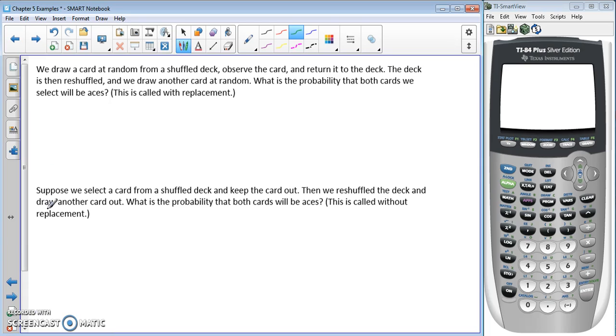The probability of two aces is the probability that the first and the second is an ace.